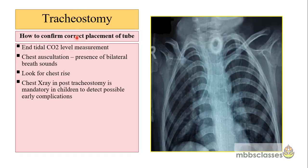After placing the tracheostomy tube, its correct position is confirmed by measuring end-tidal carbon dioxide level, chest auscultation for bilateral breath sounds, and observing chest rise. In children, a chest X-ray is mandatory to detect possible early complications. In a PVC tube, the radio-opaque line on X-ray helps determine tube position.